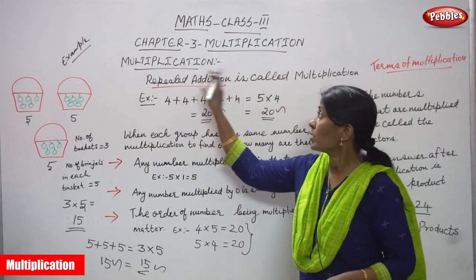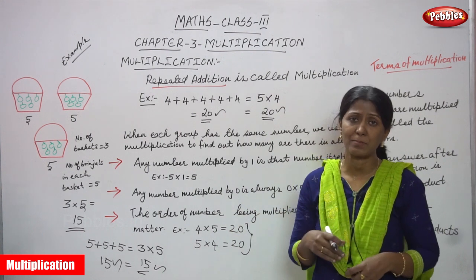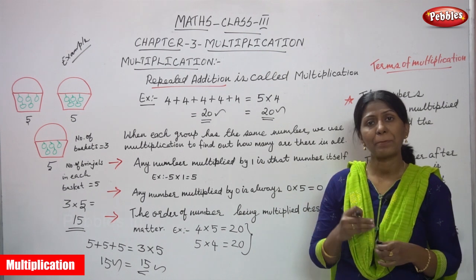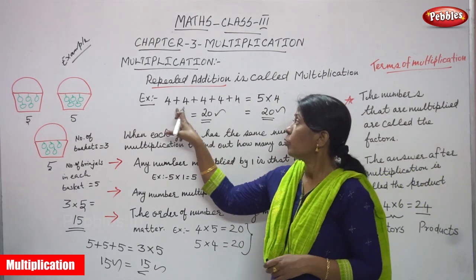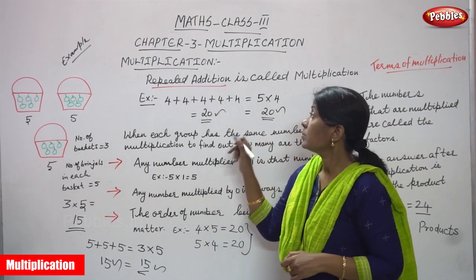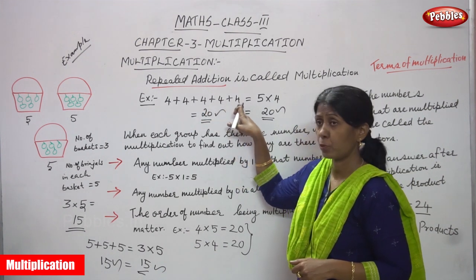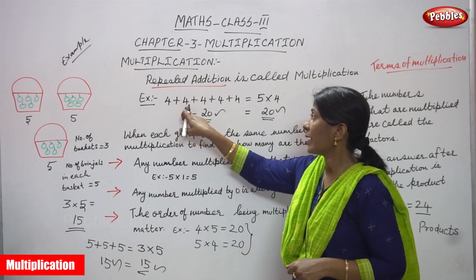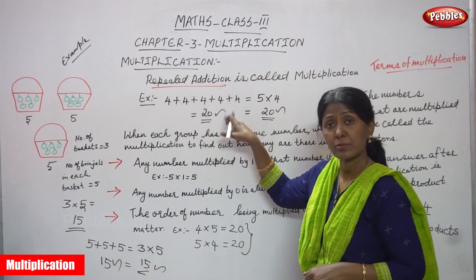I will repeat once again. What does multiplication mean? Repeated addition is called multiplication. You must know the definition: 4 plus 4 plus 4 plus 4 plus 4 — you just add all the 4s, you can get 20. 4 plus 4 is 8, 8 plus 4 is 12, 12 plus 4 is 16, 16 plus 4 is 20.